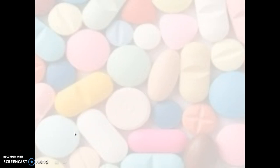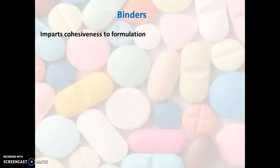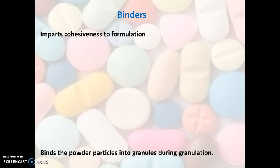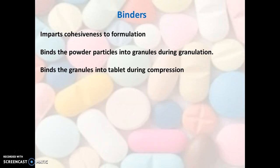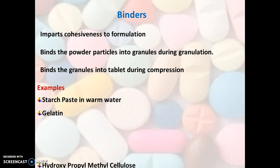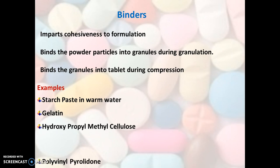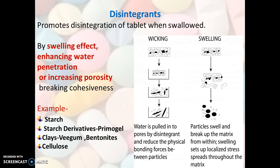The next category is binders. Binders are those agents which impart cohesiveness to formulations. They bind the powder particles into granules during granulation and bind the granules into the tablet during compression. Examples of binders are starch paste in warm water, gelatin, hydroxypropyl methylcellulose, and polyvinylpyrrolidone.